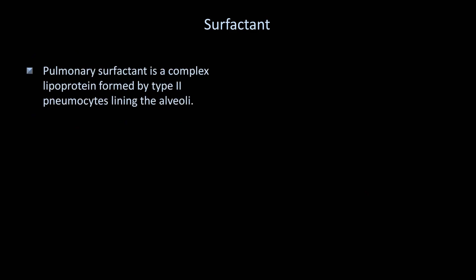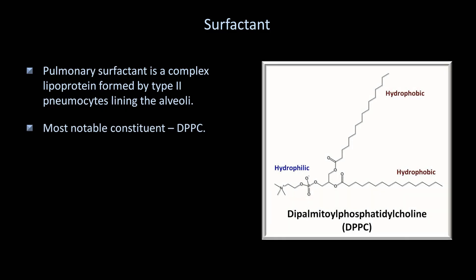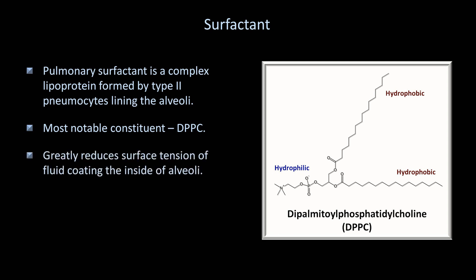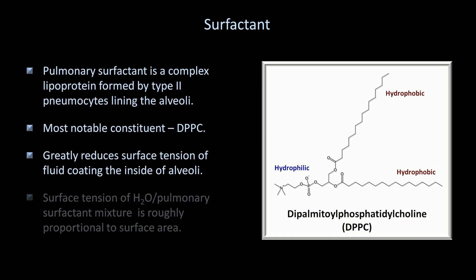Let me return to the lungs to talk about pulmonary surfactant, which is a complex lipoprotein formed by cells called type 2 pneumocytes, which line the alveoli. The most notable constituent of surfactant is called DPPC, or more formally, dipalmitoyl phosphatidylcholine. This compound greatly reduces the surface tension of the fluid coating the inside of the alveoli. Interestingly, unlike water, the surface tension of the mix of water and pulmonary surfactant is roughly proportional to the surface area over which it is spread. In other words, the power of surfactant to lower surface tension is most pronounced when the alveoli are smaller than when they are distended.